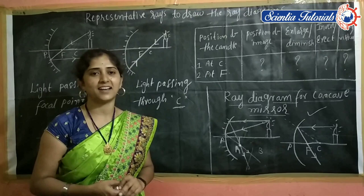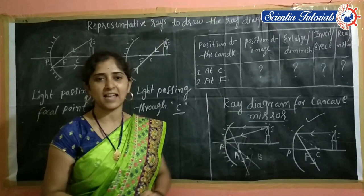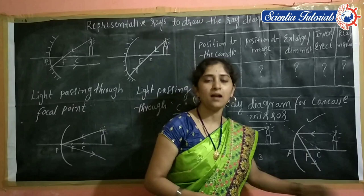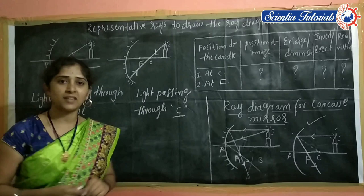In the previous session, we learned about ray diagrams — where reflected rays meet at a point, that point is called the image of the object in front of the concave mirror. The light falling parallel to the principal axis passes through the focus. Now let me look at some more representative rays which are useful to draw the ray diagrams.